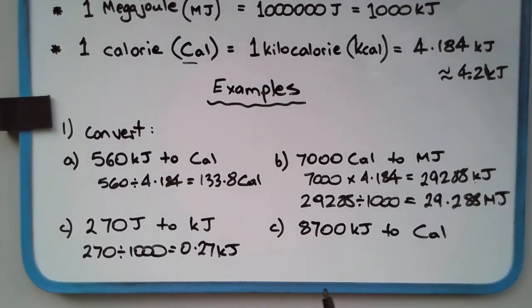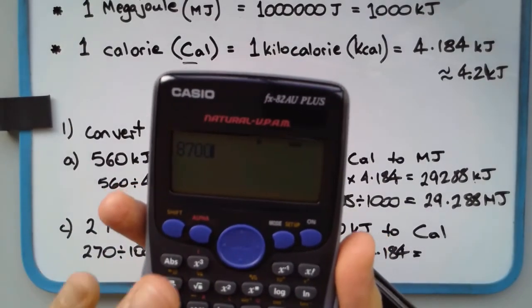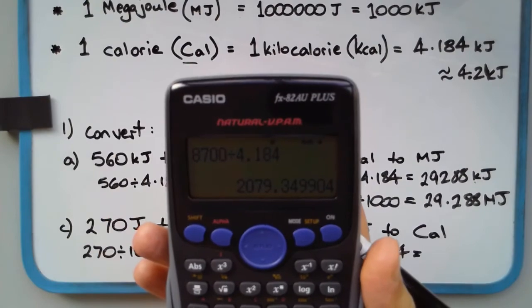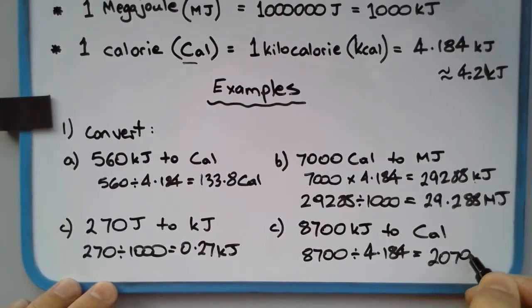8700 kilojoules to calories. Some of you might recognize this number. 8700 divided by 4.184 equals 2079 calories. Where this number comes from—that's the average adult energy requirements per day, the daily energy requirements. In the next video, I'll look at the second part of this example where we examine a portion of a food label.